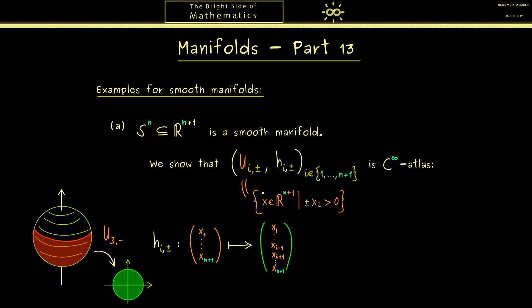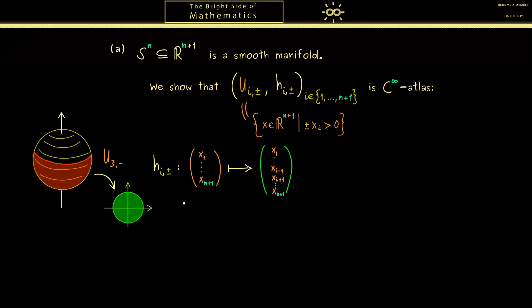But now please recall if we want to talk about smooth manifolds, we need to talk about the transition maps. In other words, now we have to take two charts. And maybe let's stay with the visualization in R^3. So now we take one set U_{i,+} and another one U_{j,+}, and then we are interested in the overlap, the intersection of both sets.